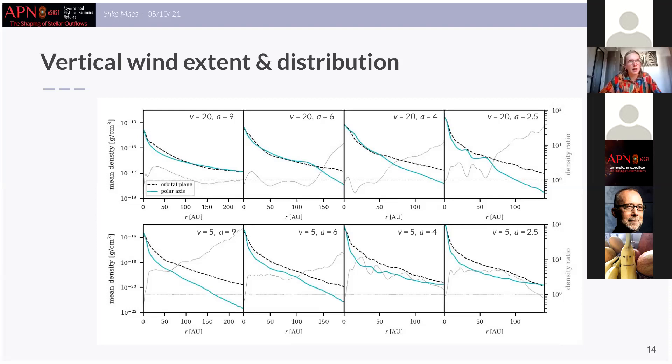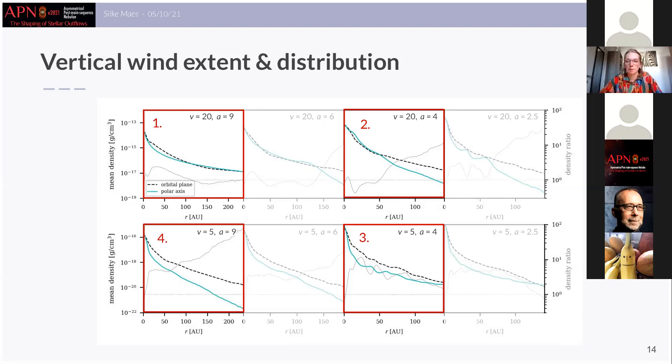Now if we focus on only these four models we can actually distinguish four different characteristics in these figures. So for the first model which is a fast model we see that globally the wind material is distributed more or less evenly between the orbital plane and the polar regions. Then for the second model that I've indicated here which is the same as the first model but now the companion is located more closely to the HB star, the mean density in the polar region starts to decrease from about 50 AU on and also the gray curves indicate this clearly. So this means that higher in the polar region there is a void present in the outflow.